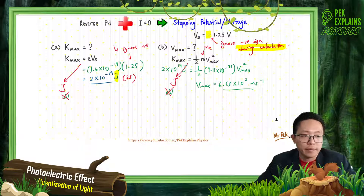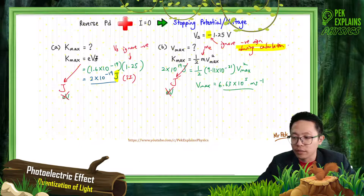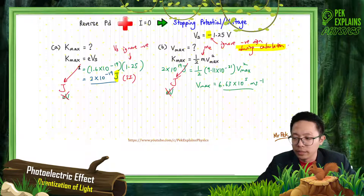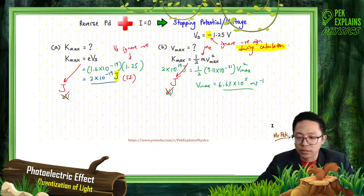That's the maximum velocity for Kmax. Make sure all formulas give Kmax in Joules, not in electron volts. That's all for this question.